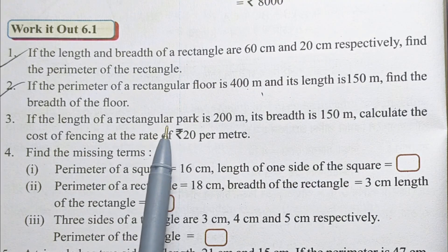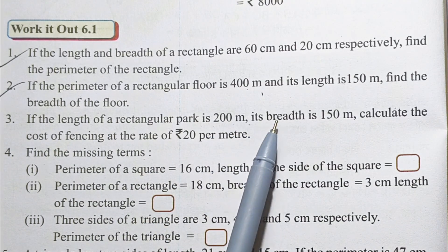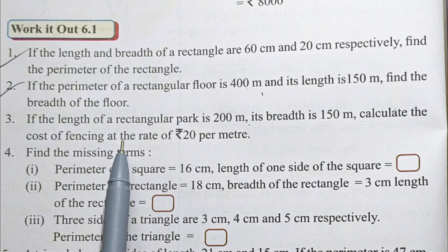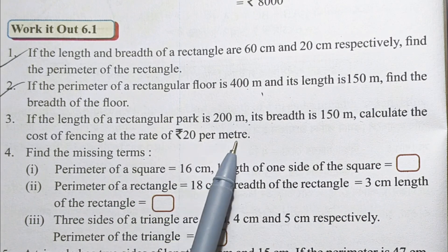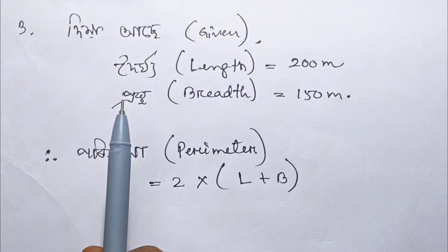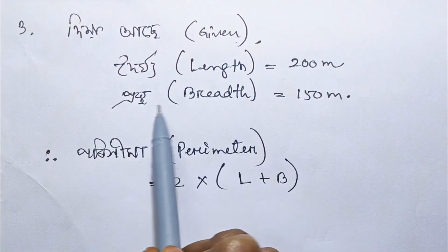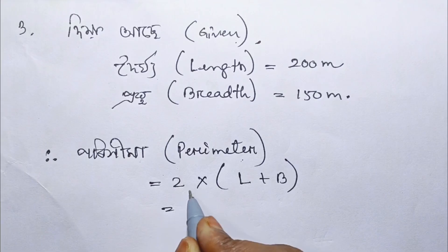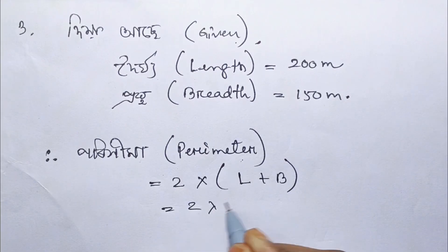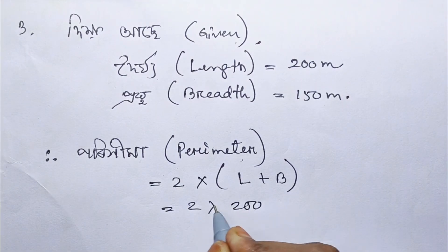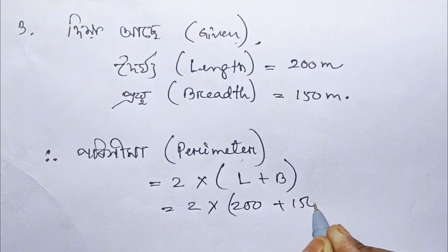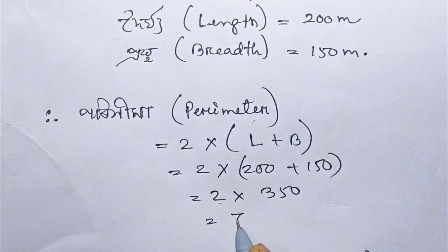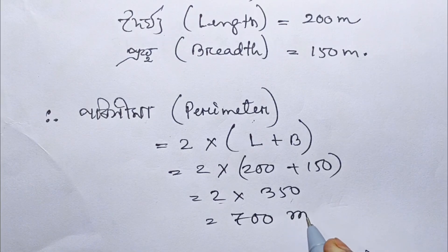If the length of a rectangular park is 200 meters and its breadth is 150 meters, calculate the cost of fencing at the rate of Rs. 200 per meter. Perimeter = 2 into (length + breadth) = 2 into (200 + 150) = 2 into 350 = 700 meters.